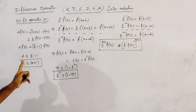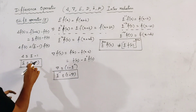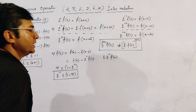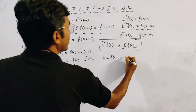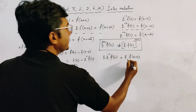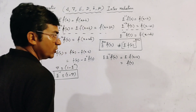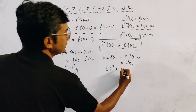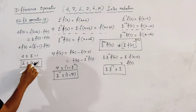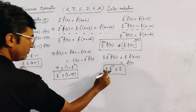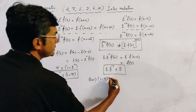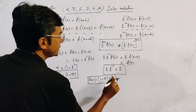From these two relations we get an important result: E times E inverse of f(x) equals E of f(x - h), which equals f(x). So E times E inverse is equivalent to the identity operator I. Using this, we substitute E = (delta + 1) and E inverse = (1 - nabla), giving (delta + 1)(1 - nabla) equivalent to the identity operator I.